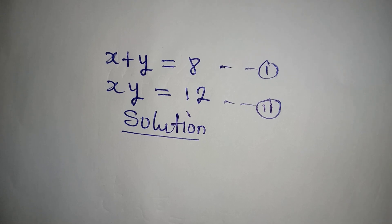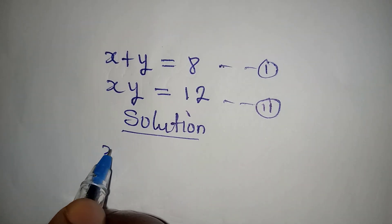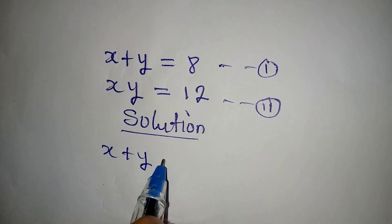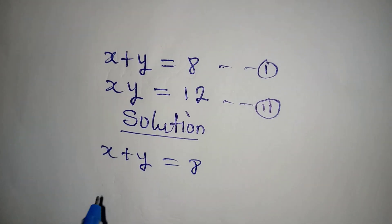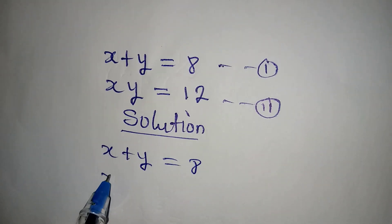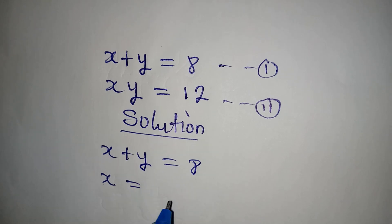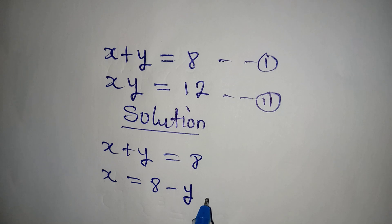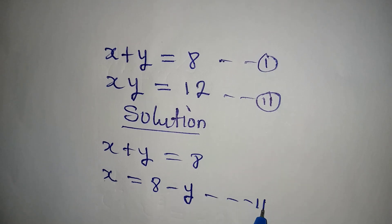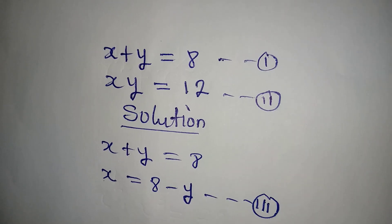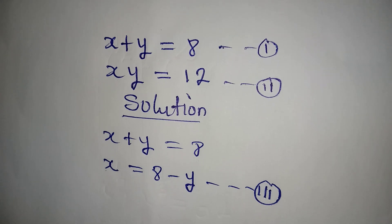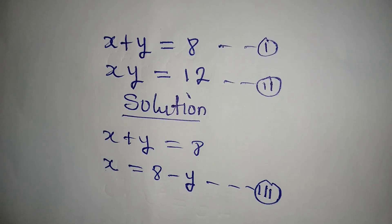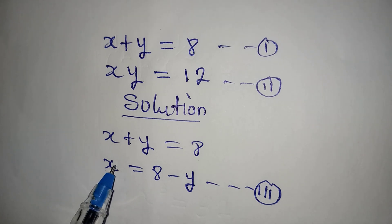From equation 1 where we have x plus y equal to 8, we can make x the subject, so we have x equal to 8 minus y, and we can call this our equation 3. Remember we're going to need this equation again. Now what we'll do is put this value of x into equation 2.